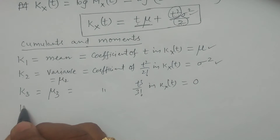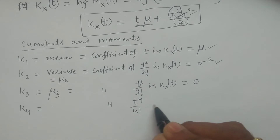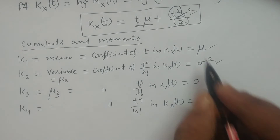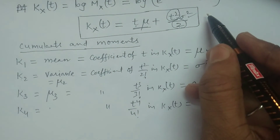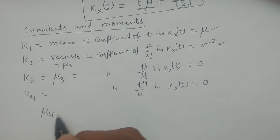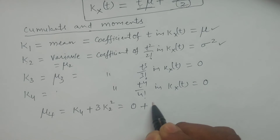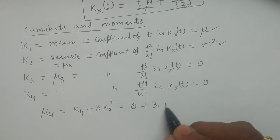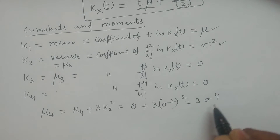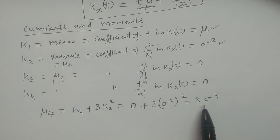So μ₅ is 0, etc. Now come to the fourth cumulant k₄ — it is the coefficient of t⁴/4! in K(x,t). Is there any coefficient of t⁴ here? No. So hence k₄ is 0. But μ₄ is not 0. Remember, μ₄ = k₄ + 3k₂² = 0 + 3·(σ²)² = 3σ⁴. Even-order moments exist; odd-order moments are 0. That is the property we have studied and proved here.